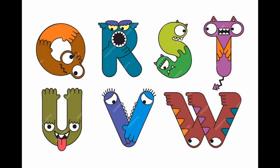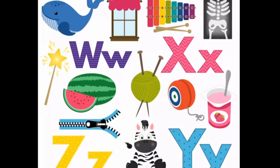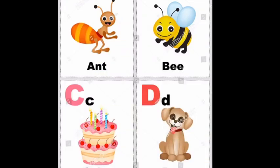Hats. I is for igloo. I, I. Igloo. J is for jump. J, J. Jump. K is for kangaroo. K, K. Kangaroo. L is for lion. L. Lion. M is for monkey. M, M. Monkey. N is for nose. N. Nose.